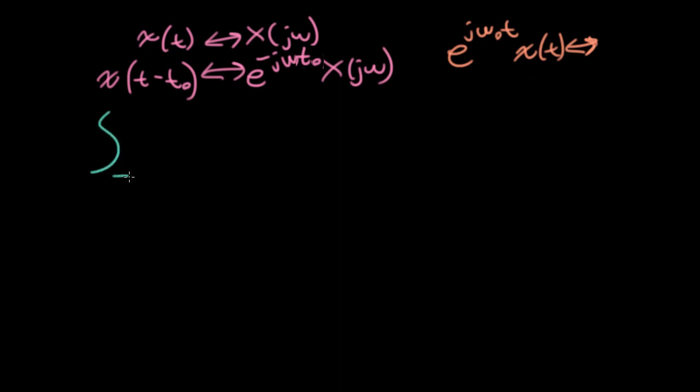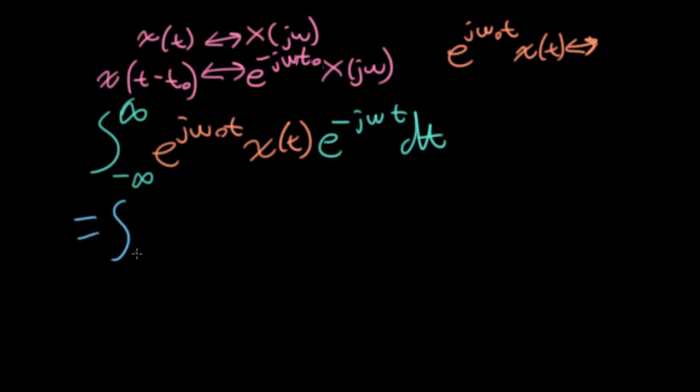Let's do the same thing here by putting e to the j omega0 into the Fourier transform. So here we'll take the Fourier transform of e to the j omega0 t x(t), and the Fourier transform integral has us integrating against e to the minus j omega t dt. We can combine the exponents.